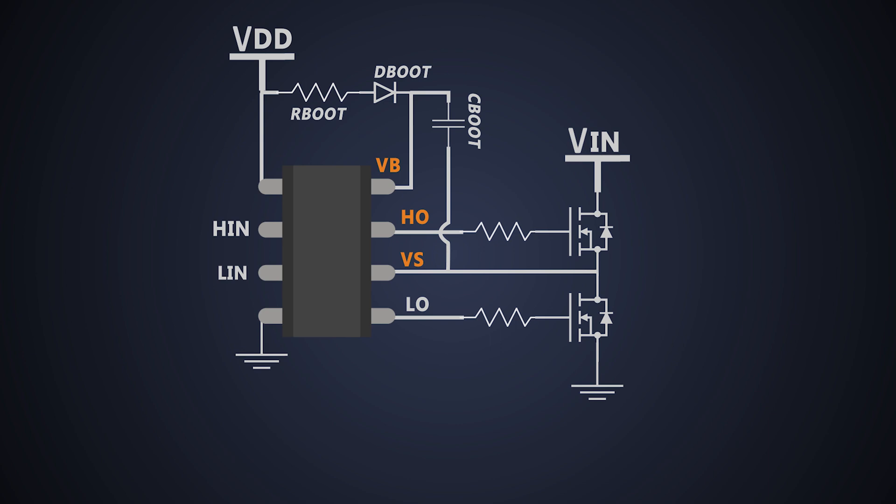Let's consider there are 2 switches which are high side and low side switches connected like this. This type of topology is either used in half bridge converters or synchronous buck converters. Our focus is on the high side switch. VS pin is connected to the junction of both of these transistors. HO is connected to the gate of the high side switch.